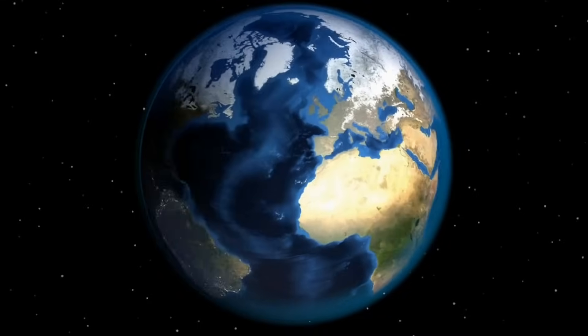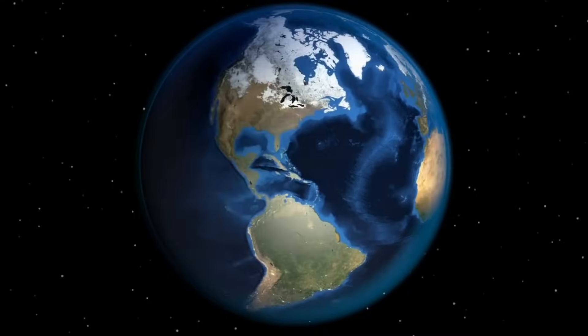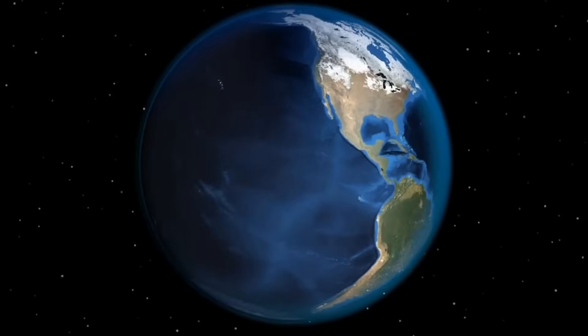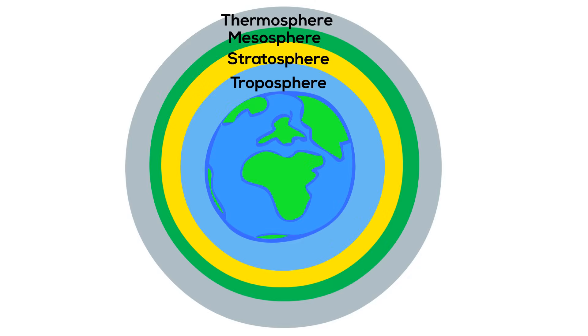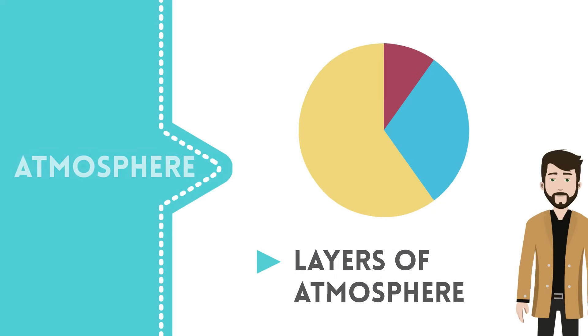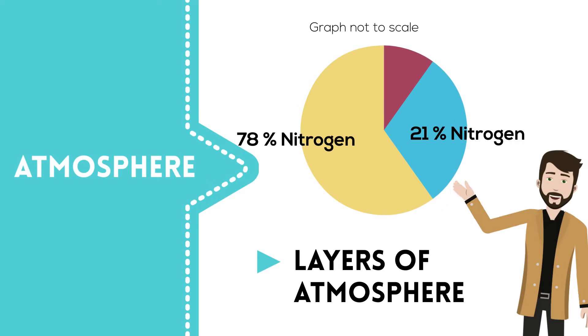The Earth is surrounded by a protective atmosphere. This atmosphere can be divided into four individual layers separated by changes in air temperature. Our atmosphere is composed of 78% nitrogen, 21% oxygen, and 1% other gases.